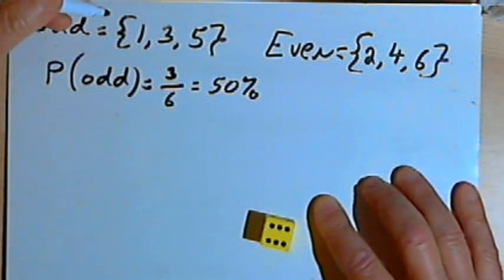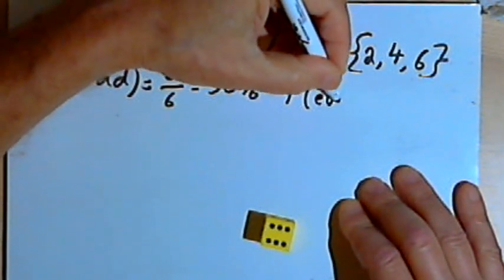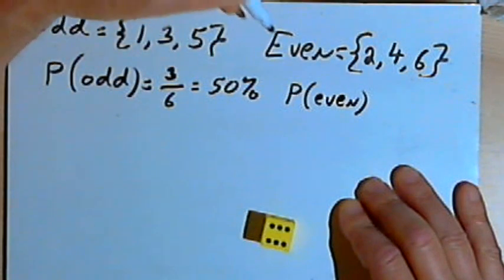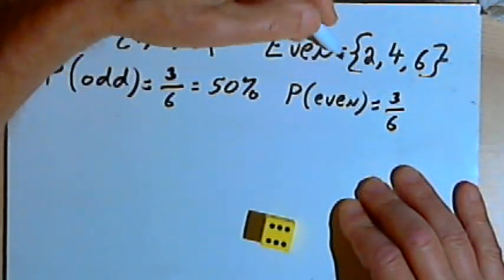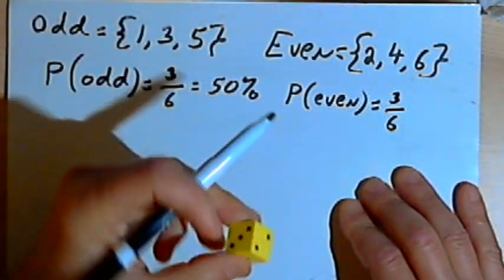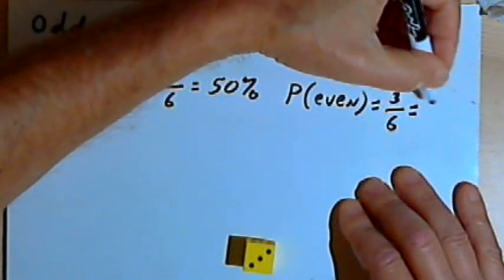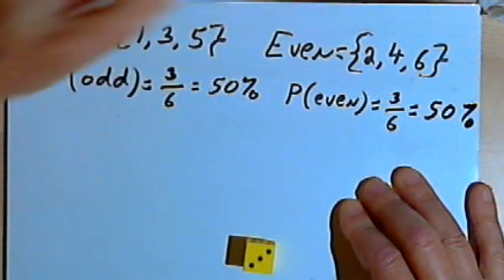Now I can do the same thing for even numbers. I could figure out the probability of getting an even number, and that would also be 3 over 6, because there's three ways I can throw an even number, a 2, or a 4, or a 6. And once again, there are six sides to the die. So that would be 3 over 6, or once again, 50 percent.